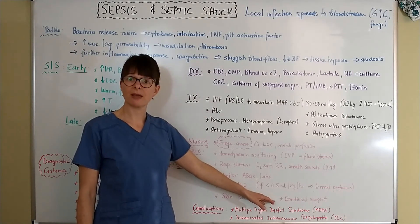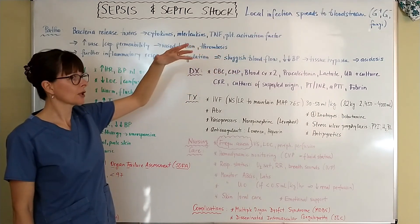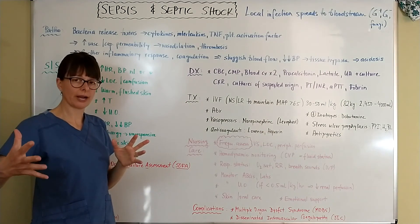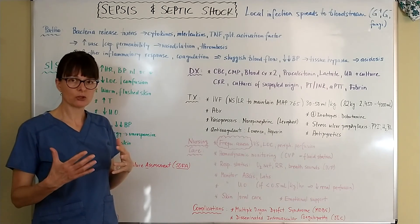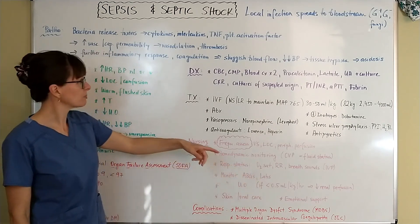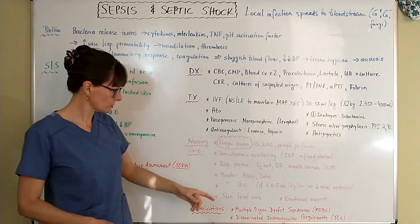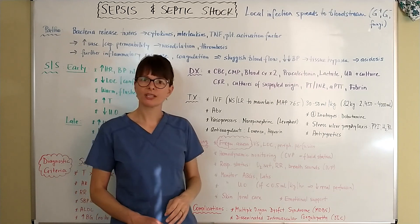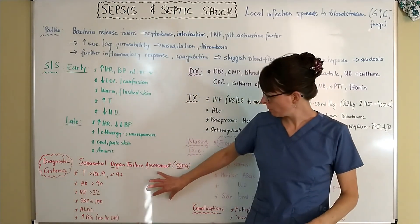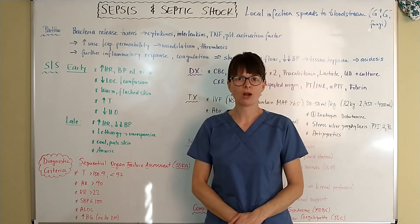Emotional support for the patient and family is important. If sepsis progresses and blood pressure continues to drop — particularly if the patient requires vasopressors — they have developed septic shock. Complications can go further: patients can develop Multiple Organ Dysfunction Syndrome (MODS) or Disseminated Intravascular Coagulopathy (DIC), which means the body shifts from a coagulation state to a bleeding state. Please watch other videos on MODS and DIC. Thanks for watching this video on sepsis and septic shock — remember the key signs of early and late sepsis to prevent serious health consequences.